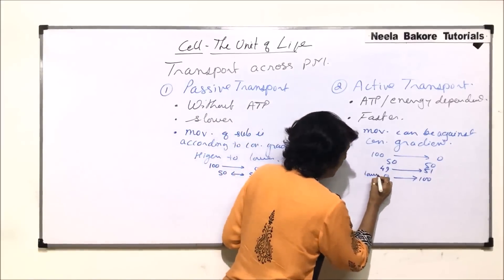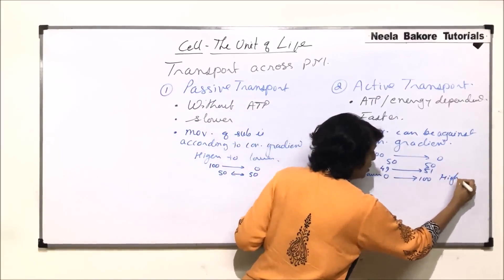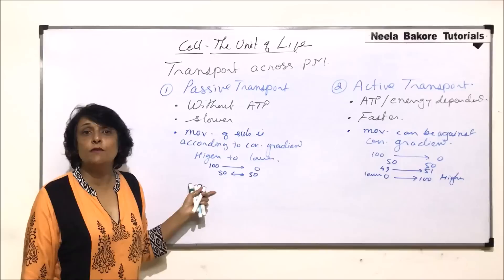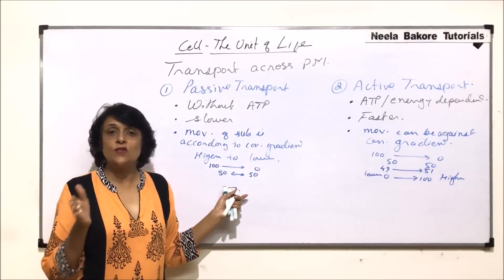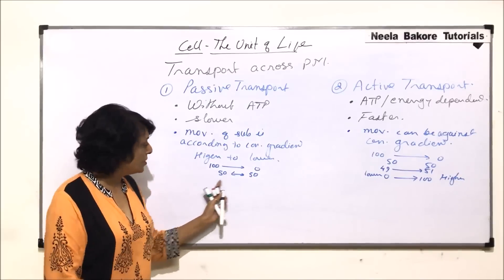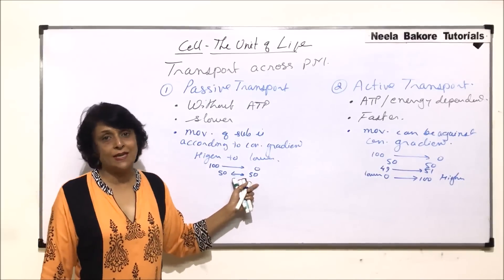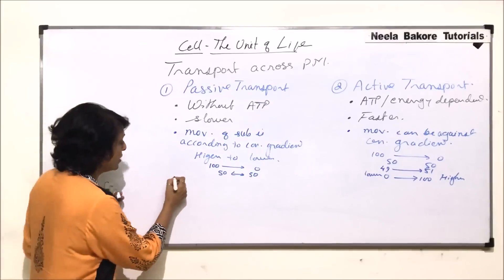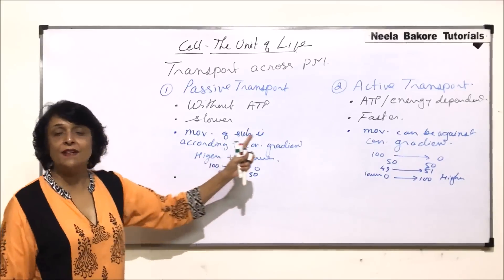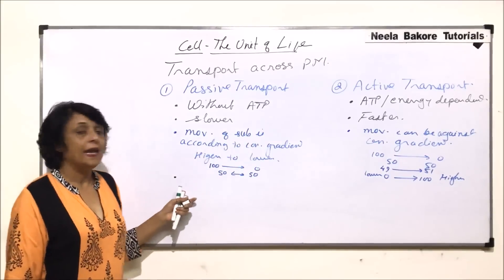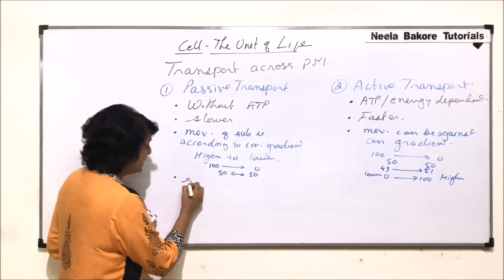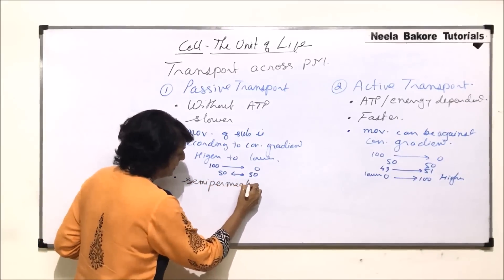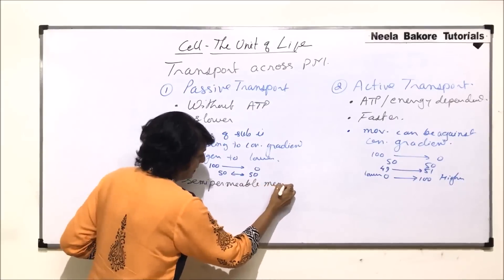So in passive transport, movement is always from higher concentration to lower concentration until equilibrium is reached, after which net movement stops. In active transport, movement can go from lower to higher concentration as well.